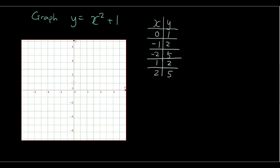Plotting those points: when x is 2, y is 5; when x is negative 1, y is 2; when x is negative 2, y is 5; when x is 1, y is 2. Joining the dots to form our parabola — this is our equation y equals x squared plus 1.